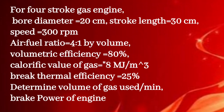Given question for a 4-stroke gas engine: bore diameter 20 cm, stroke 30 cm, speed 300 rpm, air-fuel ratio 4 is to 1 by volume, volumetric efficiency 80%, calorific value of gas 8 megajoule per meter cube, brake thermal efficiency 25%. Determine the volume of gas used per minute and the brake power of the engine.